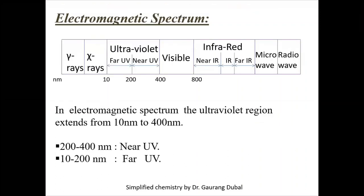If you see the electromagnetic spectrum, there are different radiations like infrared, visible, UV, microwave, radio waves, gamma rays, X-rays, etc. These are the different names for different wavelength regions of the spectrum, and the name of the radiation depends upon the wavelength.